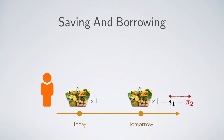This extra unit attached to 1 is called the real interest rate — the extra unit of basket you can get for one unit of basket saved today. This is called the real interest rate; it is the rate of return for baskets. When a person says what he really cares about is the real interest rate, it is not just I1 — it is not just the nominal interest rate.